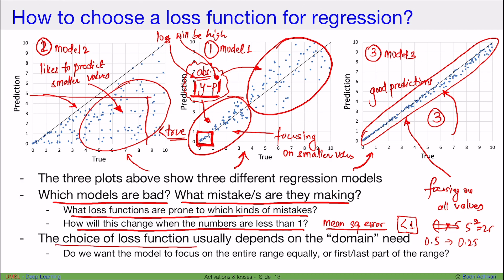So the choice of loss function usually depends on the domain need. Do we want the model to focus on entire range equally or first, last part of the range? So when we are solving a regression problem, the question at hand is where do we want to focus? Do we want to predict the smaller values more correctly or larger values more correctly? And based on our need, we want to design the loss function accordingly because we may not be able to design a loss function that equally focuses on the entire range of our output variable.